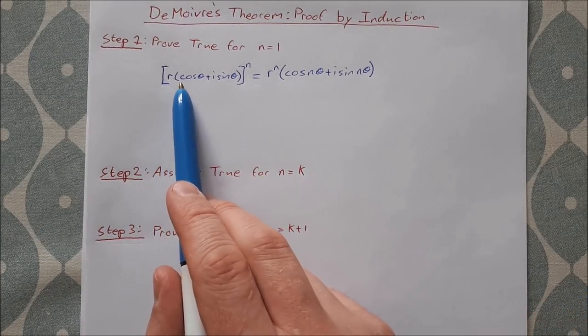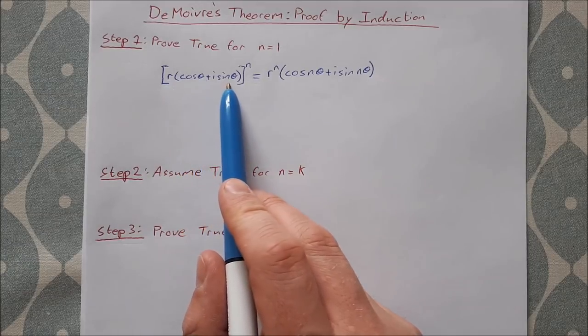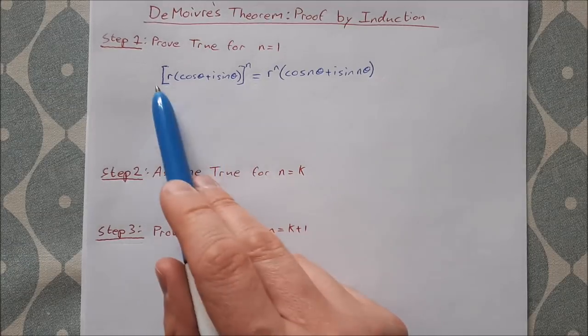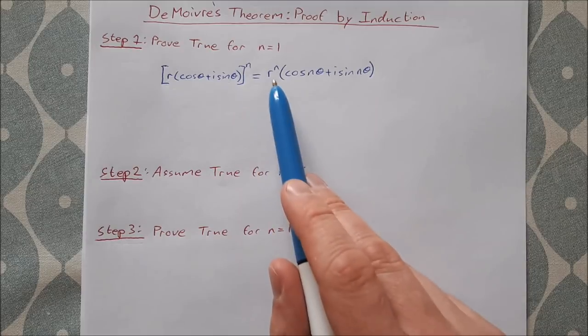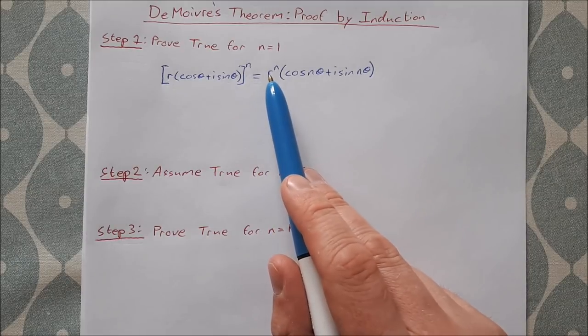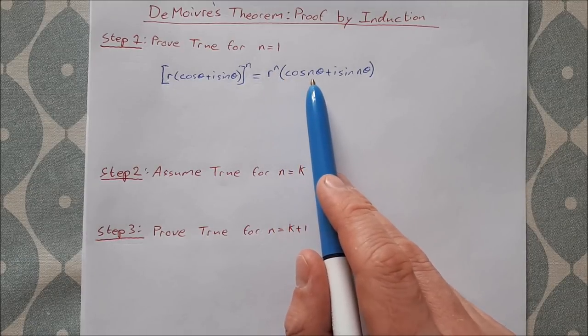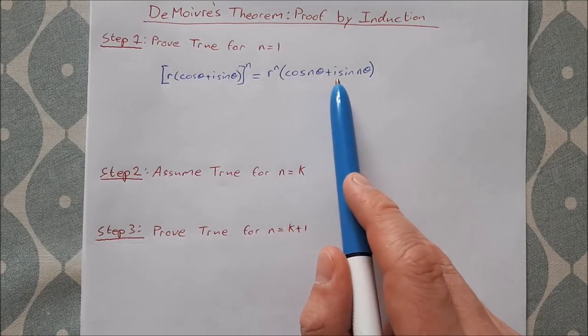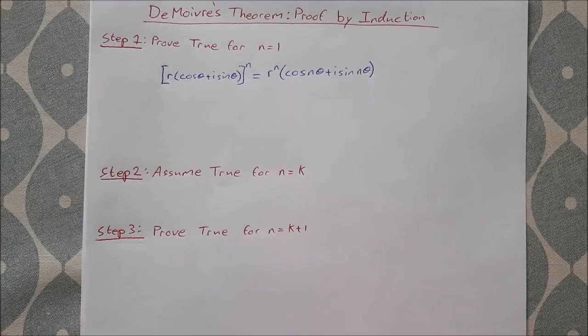So r times cosine theta plus i sine theta, all to the power of n, will be equal to r to the power of n, times cos n theta plus i sine n theta.